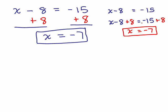So you can either add 8 to both sides, sort of in a horizontal fashion here, or you could do it in a vertical fashion.